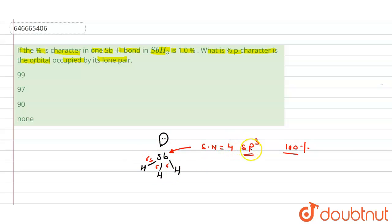So one s is basically 1%, so remaining p will be 99%. So the lone pair will be how much? The lone pair will be here, percentage p character of lone pair will be 99%.